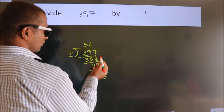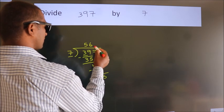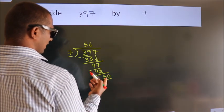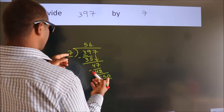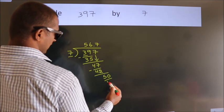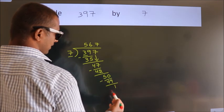After this, there are no more numbers to bring down. So we put a dot and take 0. So 50. A number close to 50 in the 7 times table is 7 times 7 equals 49. Now we subtract and get 1.